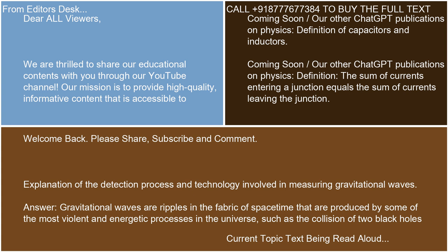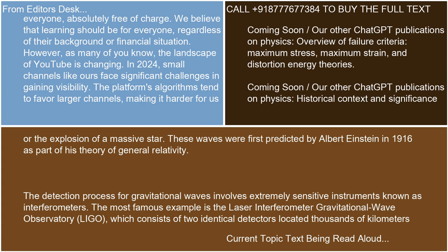Explanation of the detection process and technology involved in measuring gravitational waves. Gravitational waves are ripples in the fabric of space-time that are produced by some of the most violent and energetic processes in the universe, such as the collision of two black holes or the explosion of a massive star. These waves were first predicted by Albert Einstein in 1916 as part of his theory of general relativity.